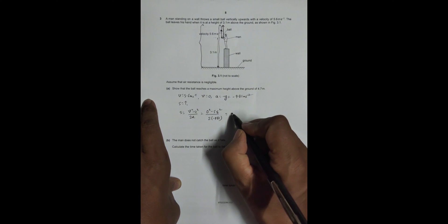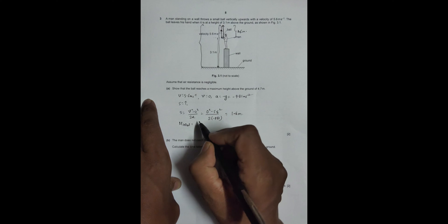So this gives me 1.6 meters. So this distance is equal to 1.6 meters. Now the total height from the ground, which I can call h_total, should be equal to this 1.6 plus 3.1.